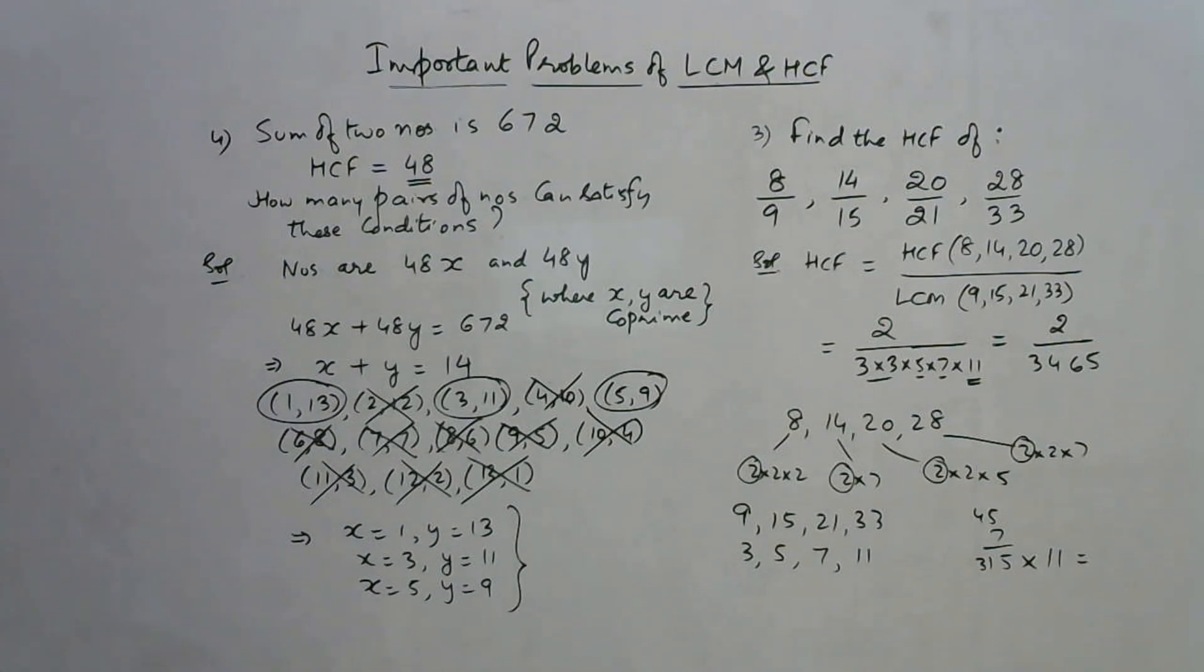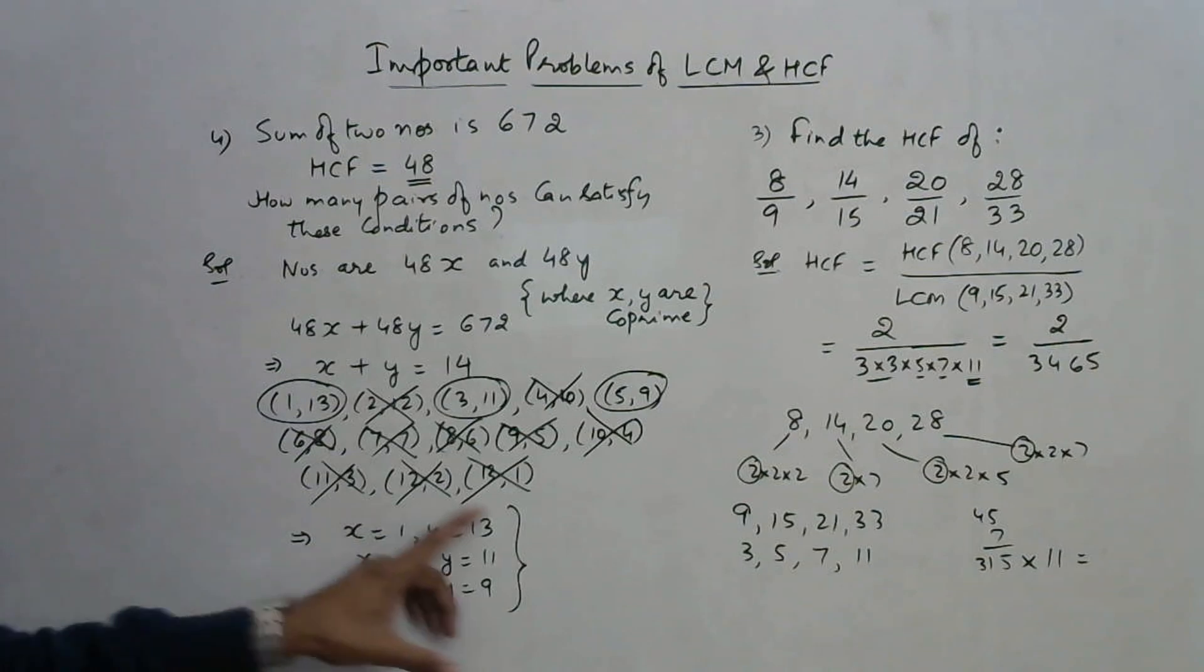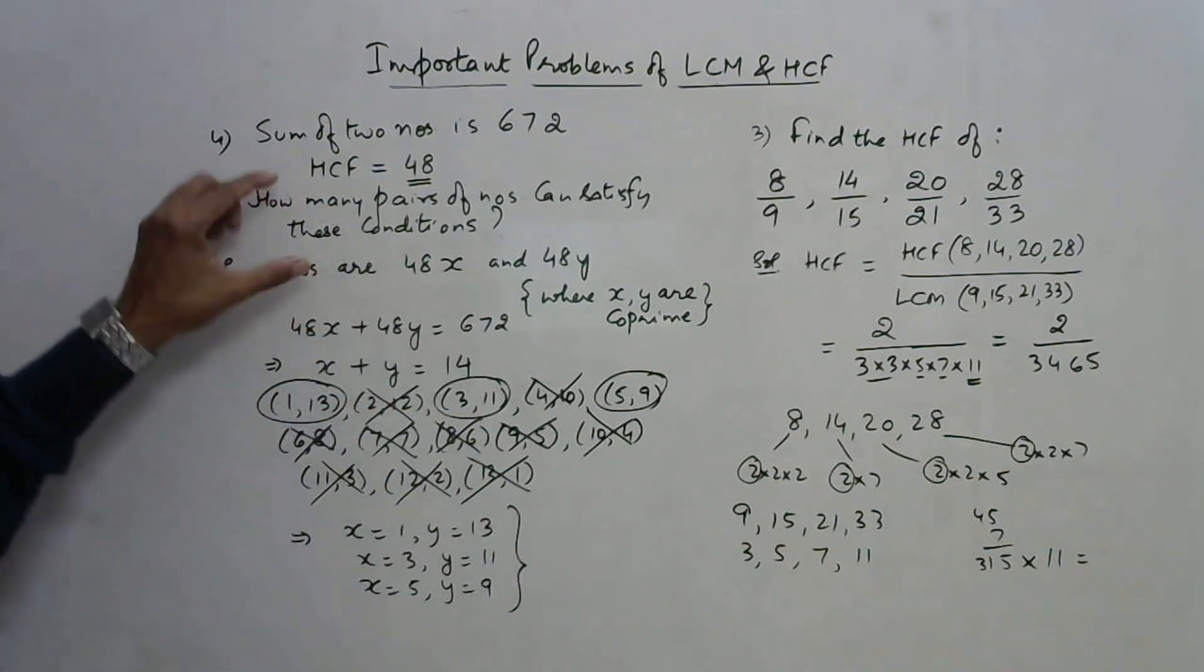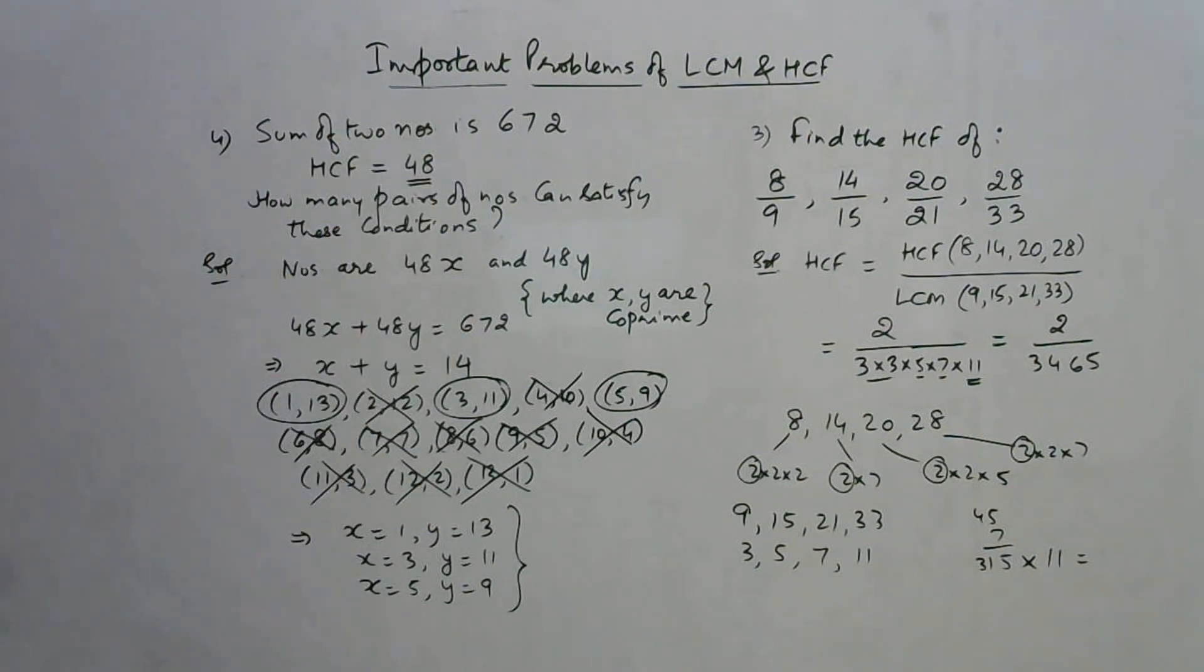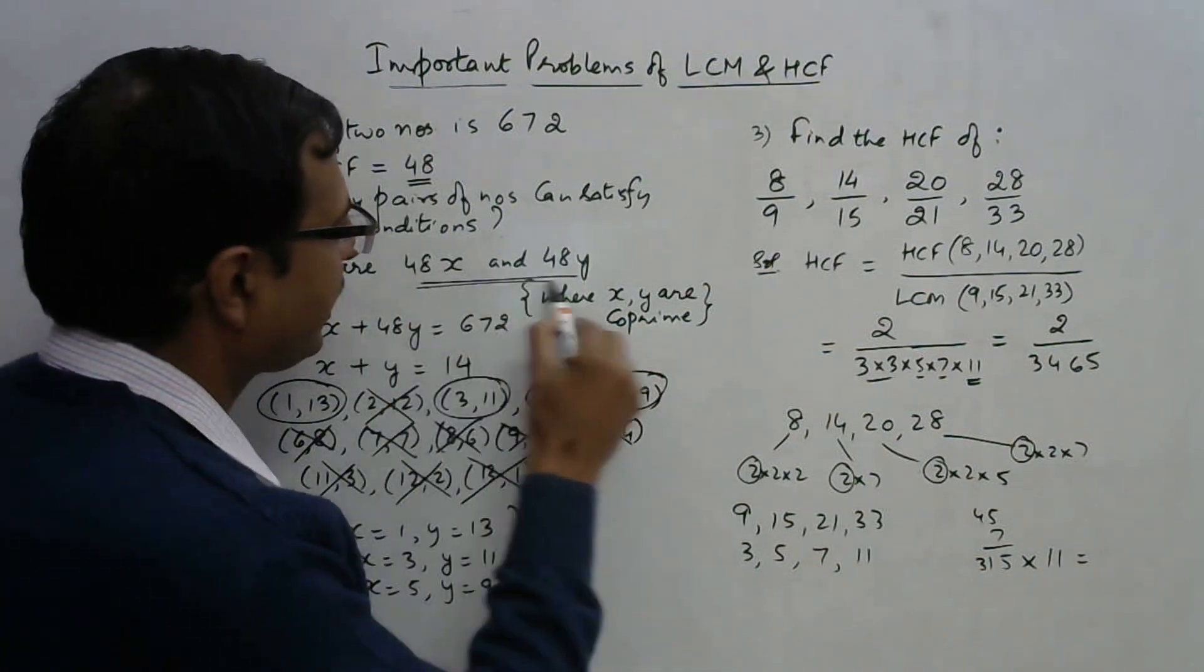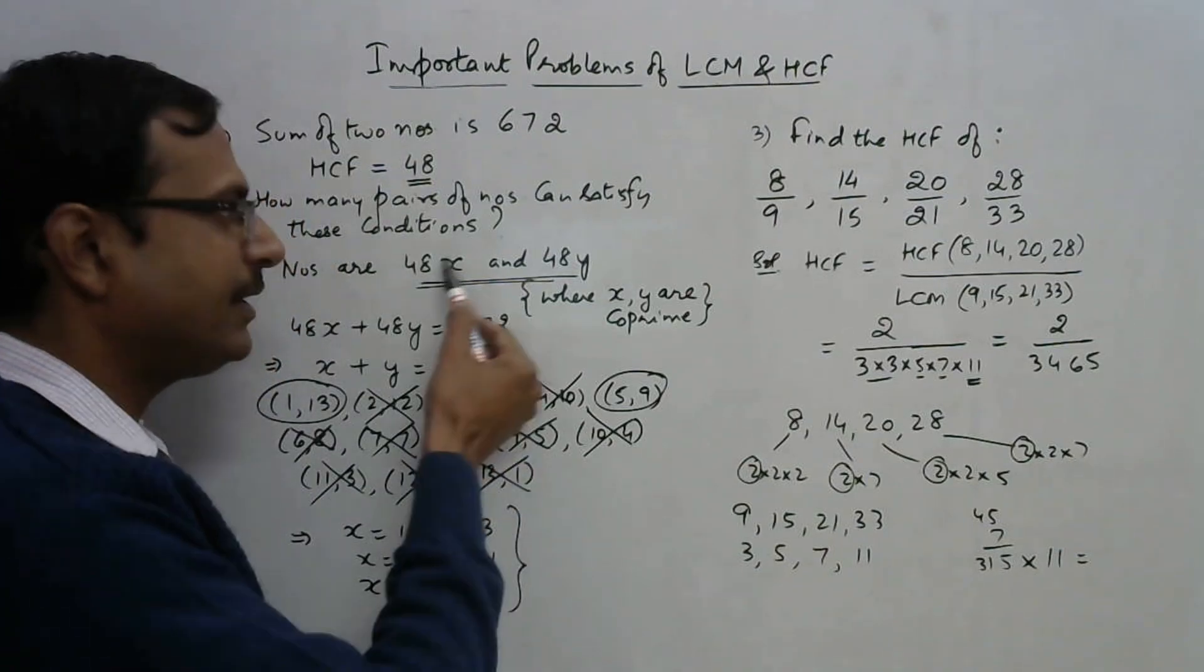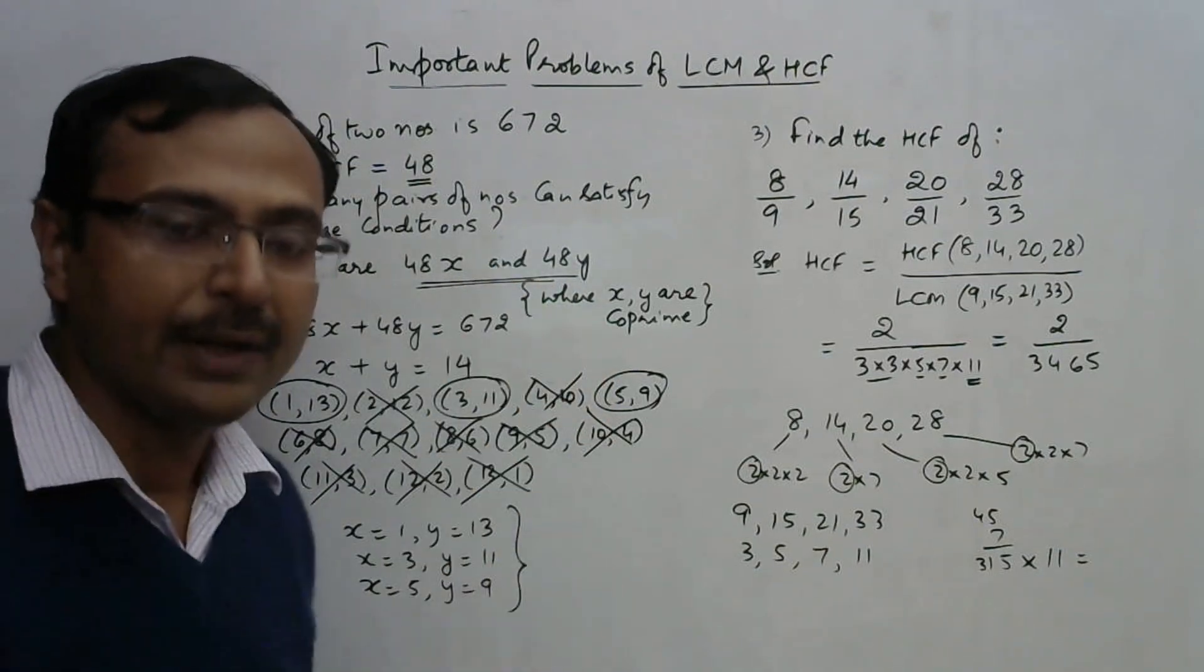In all these cases, x and y can attain values which satisfy these two conditions: that the sum of the numbers is 672 and HCF is 48. Mind you, the numbers are 48x and 48y, so if you put the values of x and y here, you will obtain the actual numbers.